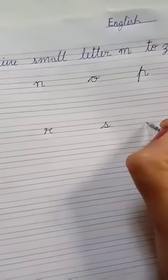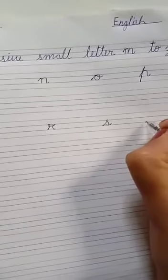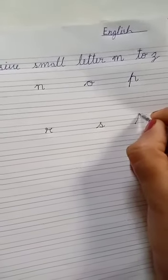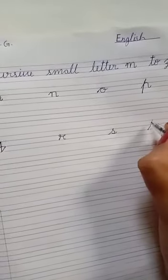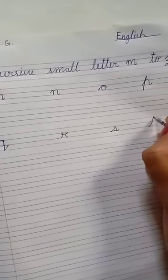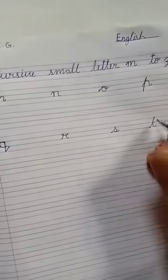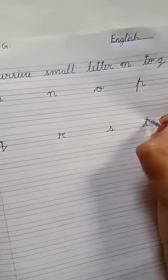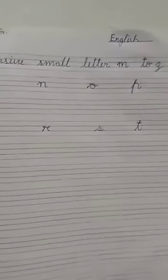T — start on the third line, then on the top line. Start from the first line and end on the third line with a curve like this. T has a lifting stroke.